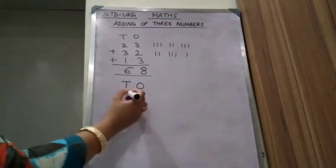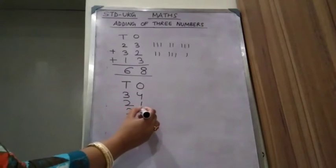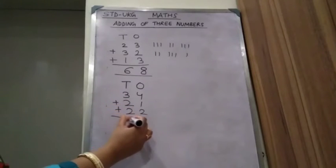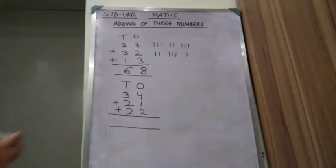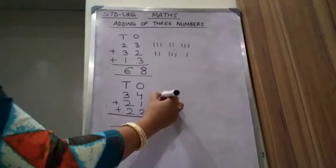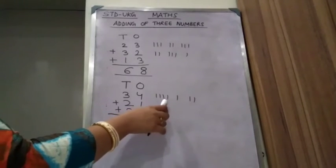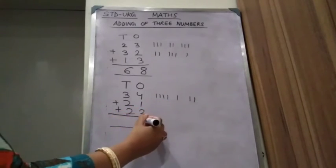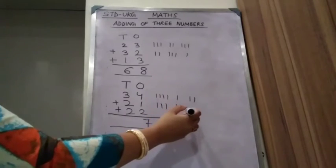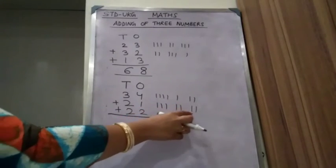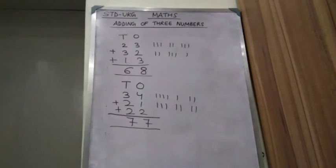We have to add 34, 21, and 22. First, add the ones column. The numbers are 4, 1, 2. Count all together: 4, 5, 6, 7. Now see the tens column: 3, 2, 2. Count: 1, 2, 3, 4, 5, 6, 7. The answer is 77 — 7 tens, 7 ones.